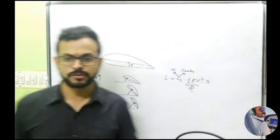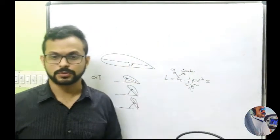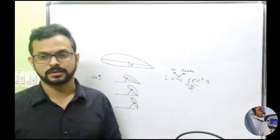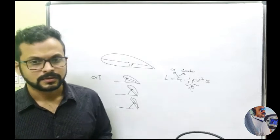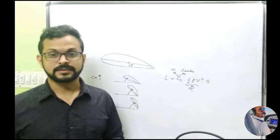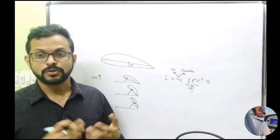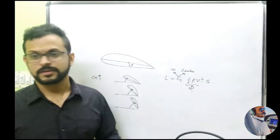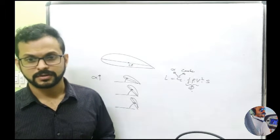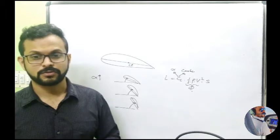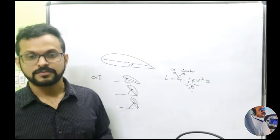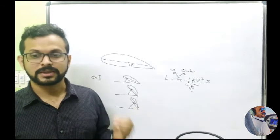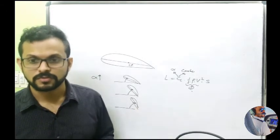You can name it as coefficient of lift, give it a value — all those things are correct. But what is it basically? The coefficient of lift is the capacity of the wing — the capability of the wing to produce lift out of a given configuration. That is what is called the coefficient of lift. It's just the ability of the wing to produce lift, and we give it a numerical value.